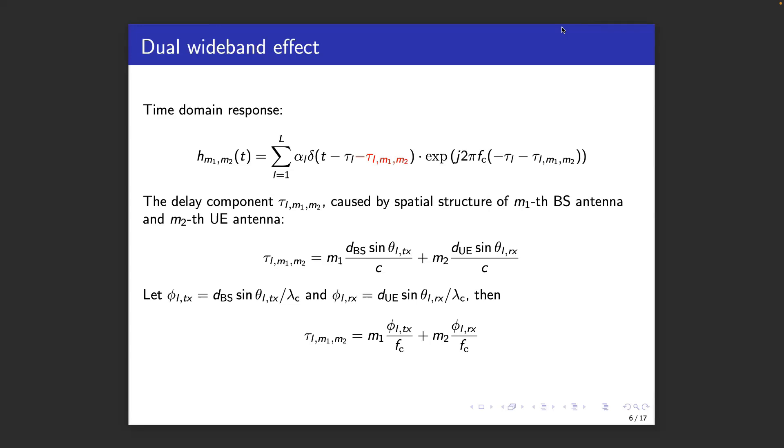We recall that we can express the delay between the different antenna elements at the base station and user as a function of the antenna element indices. And this can then be further expressed in the equation at the bottom as a function of the carrier frequency and the antenna indices.